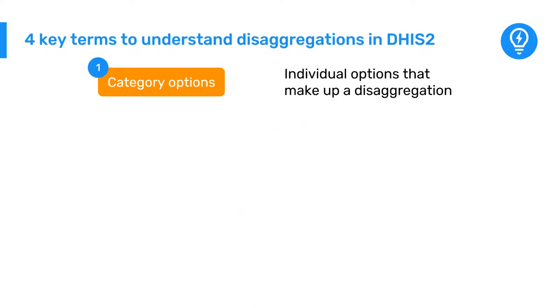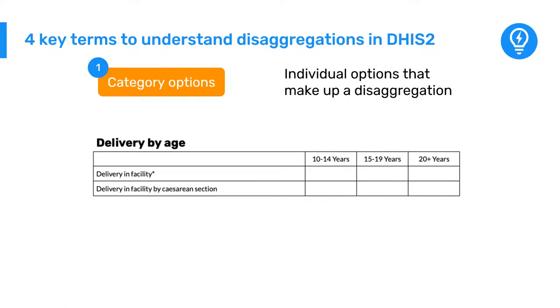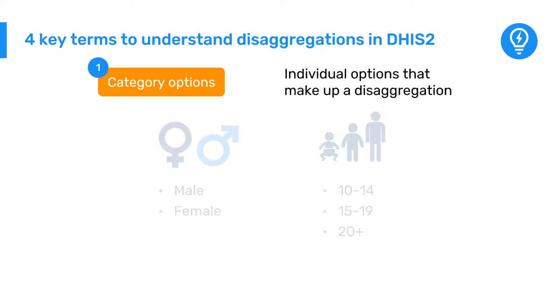In our RMN-CAH dataset for the delivery data elements, the data are disaggregated by age group 10-14, 15-19, and 20-plus years in this specific case. These are all category options.